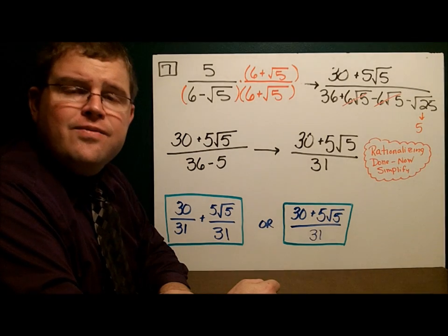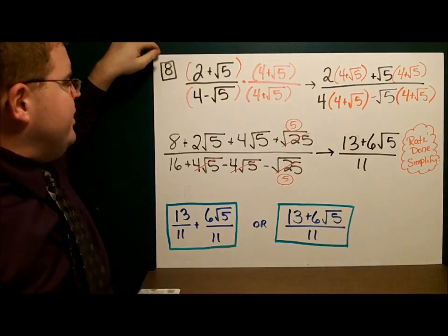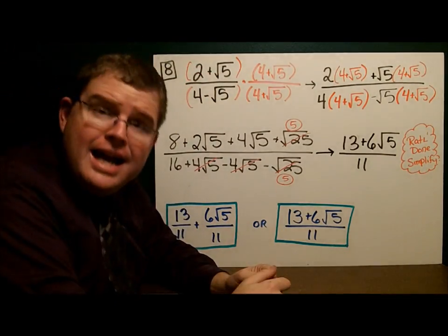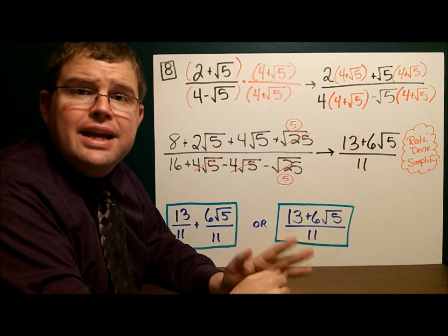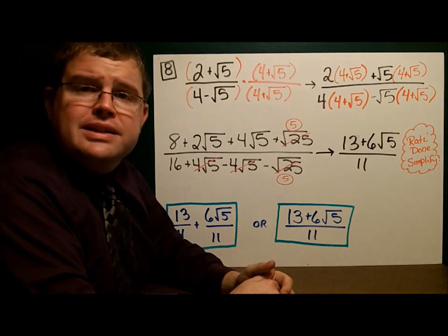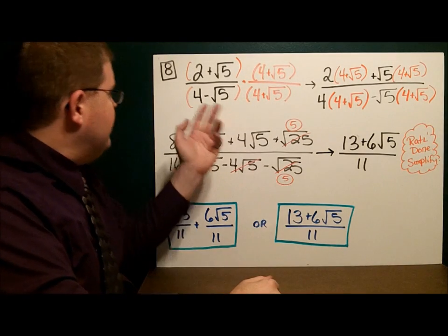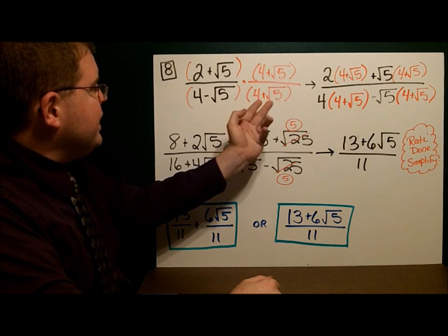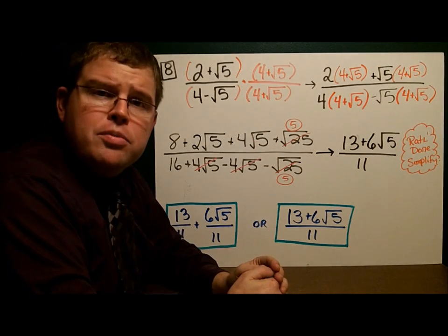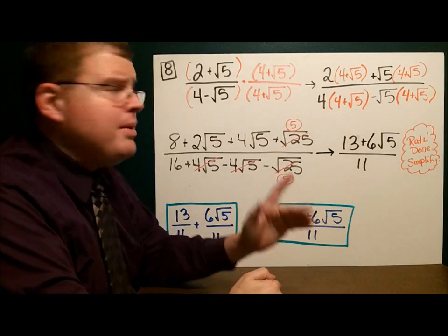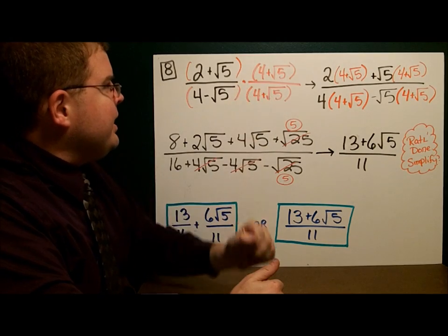Now let's take a look at the final example. This one is exciting because we have a fraction with a binomial in the numerator and a binomial in the denominator. I need to get rid of the denominator — I don't like that it has a square root in it — so I'm going to use the conjugate. We have 4 minus the square root of 5 in the denominator, so I use 4 plus the square root of 5 over 4 plus the square root of 5. Notice I'm using the conjugate of the denominator only — I don't care about the numerator.